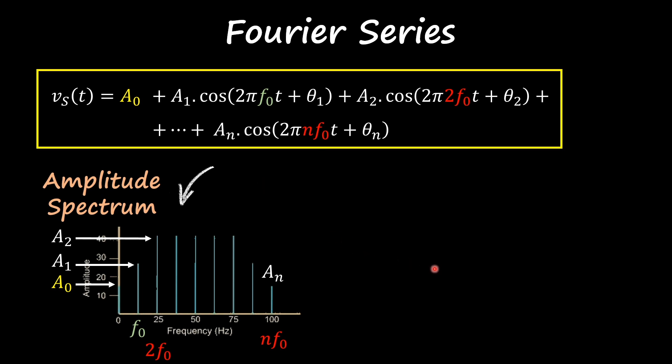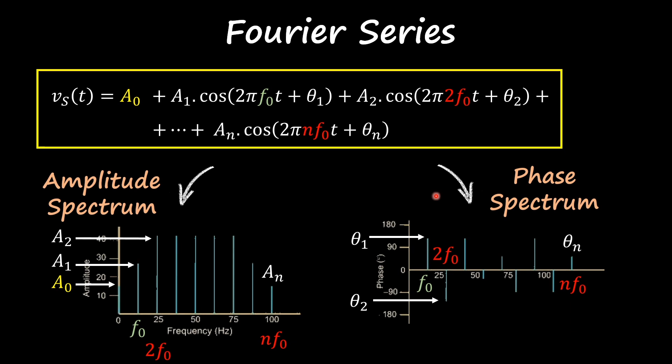You can do a similar thing and instead of plotting the amplitude on your y-axis, you can plot the phase and then you have your frequency zero with phase one, your second harmonic with phase two, so forth and so on, and you place all the frequencies with the respective phase and you have what it's called a phase spectrum.